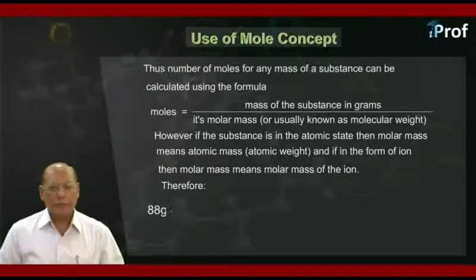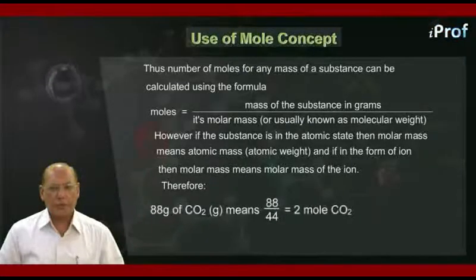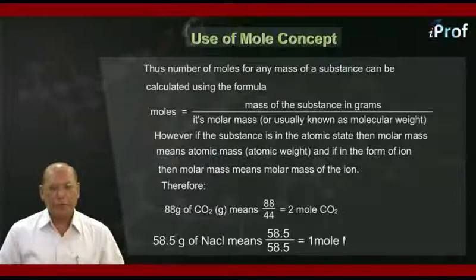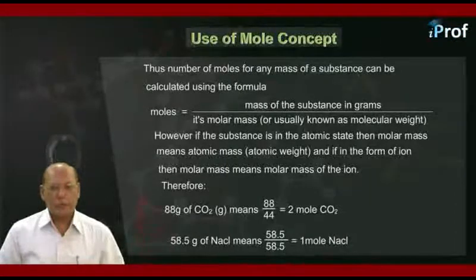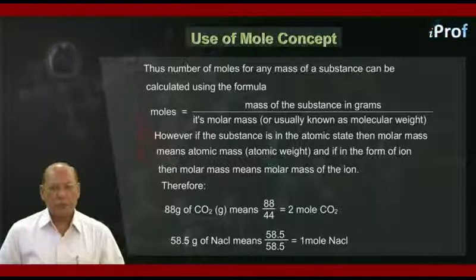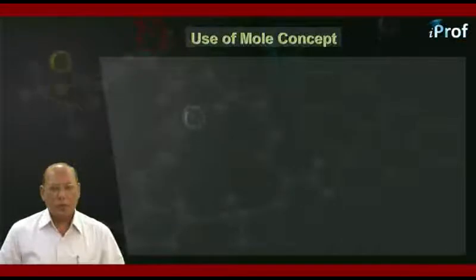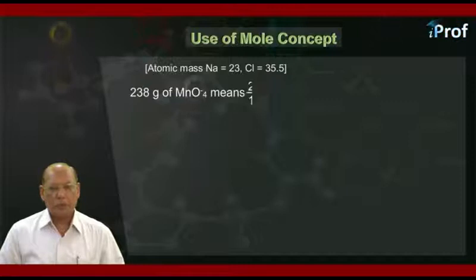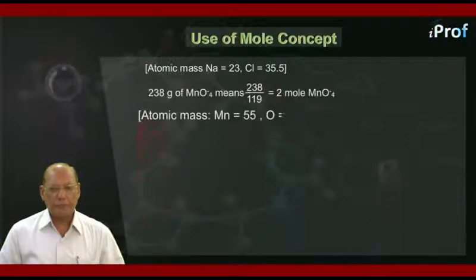Therefore, 88 grams of carbon dioxide gas means 88 ÷ 44 = 2 moles of carbon dioxide. 58.5 grams of sodium chloride means 58.5 ÷ 58.5, because that is the molecular weight of sodium chloride as clear from the atomic masses given, so this equals 1 mole sodium chloride. Knowing the atomic mass of manganese and oxygen as given below, 238 grams of MnO₄⁻ (permanganate ion) means 238 ÷ 119 = 2 moles permanganate ion, and so on.